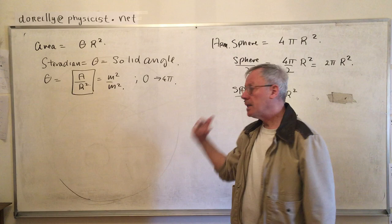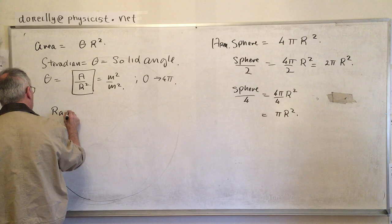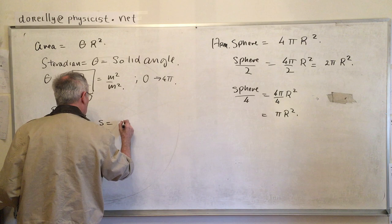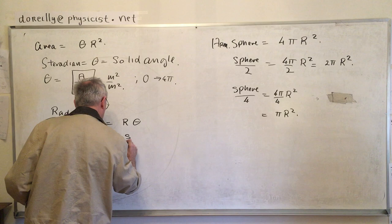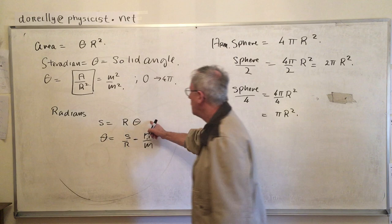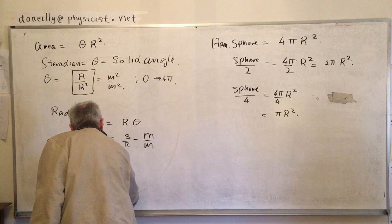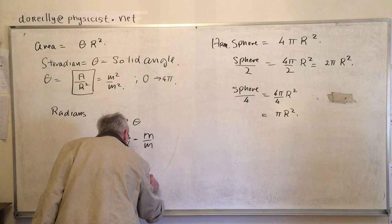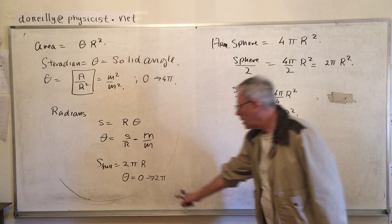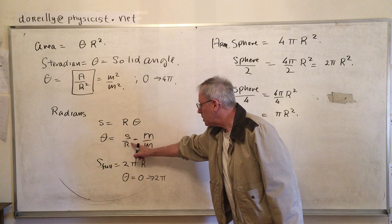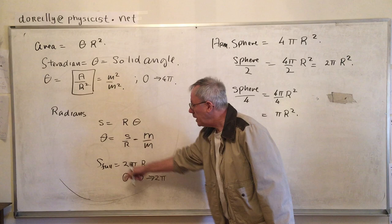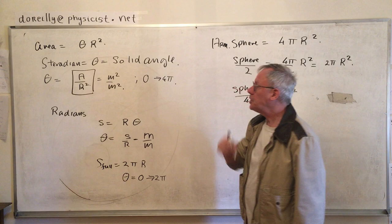Where did we get that before? We had theta when defined in radians, when theta could be 0 to 2 pi. So for a circle, just a circumference of a circle, theta varies from 0 to 2 pi, and we have radians. Theta is distance over distance, meters over meters, for this linear case. But for the solid angle case, it's going to be area over area. Get your head around a solid angle because it's going to be part of it.